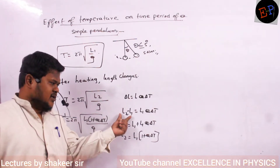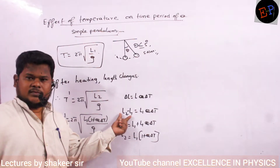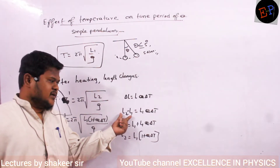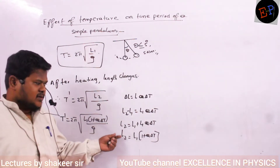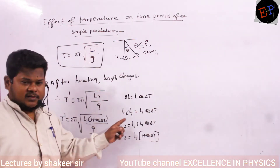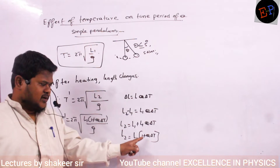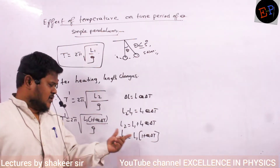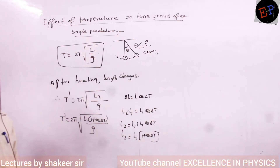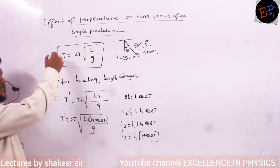Delta L can also be written as L2 minus L1. L2 minus L1 equals L1·α·∆T. So L2 equals L1 into 1 plus α·∆T, taking L1 common. That value I am substituting in for the final length.